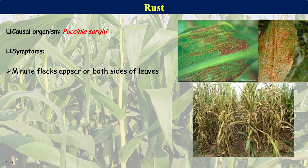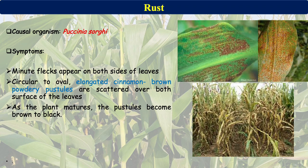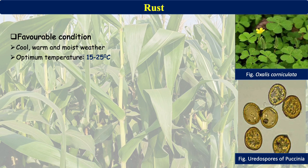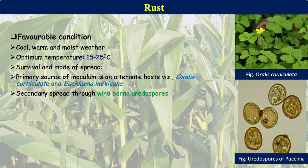The next disease is Rust, caused by Puccinia sorghi. Initially, minor flecks appear on both sides of the leaves. Circular to oval or elongated cinnamon-brown powdery pustules are scattered over both leaf surfaces. At the mature stage, the pustules become brown to black. In severe cases, infection can spread to the seed. The organism prefers cool, warm, and moist weather, with 15 to 25 degrees centigrade as the optimum temperature for growth and infection.